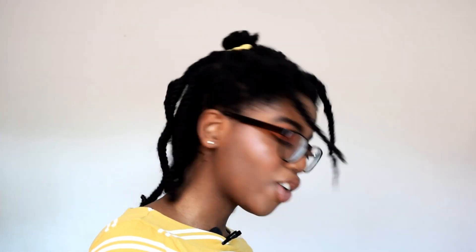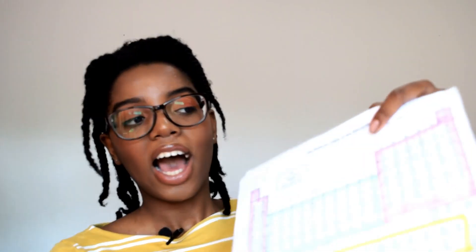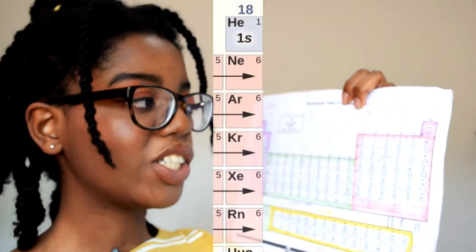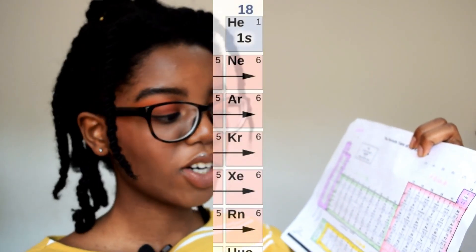So for iron, saying 1s2 2s2 2p6 3s2 3p6 4s2 3d6 is quite a lot of effort, right? So chemists, you know, they're quite lazy, and what they would do is get the noble gases and then use shorthand to write all of the electronic configuration. All of the noble gases which are helium, neon, argon, krypton, xenon, and radon can be used instead of writing out all of the previous subshells as they indicate a full outer shell.